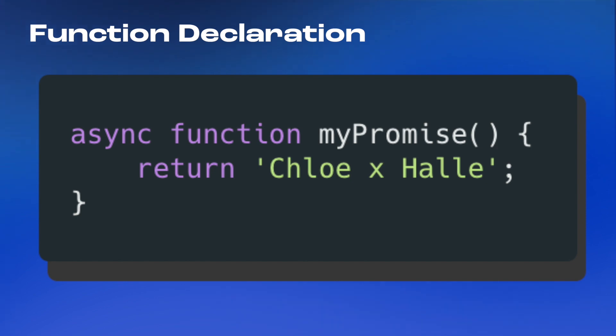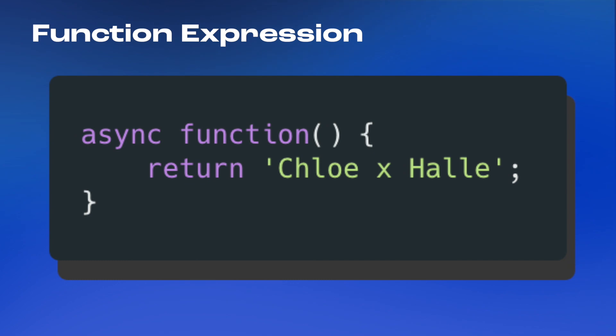It's important to note that the async keyword works with any type of function you create in JavaScript — like function declarations where you see async function and then the name, or function expressions and anonymous functions. Going back to the point that async functions return promise objects, this is really helpful for chaining and using then, catch, or any other built-in promise method.